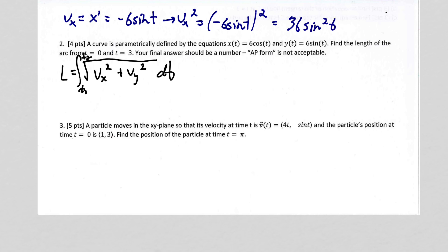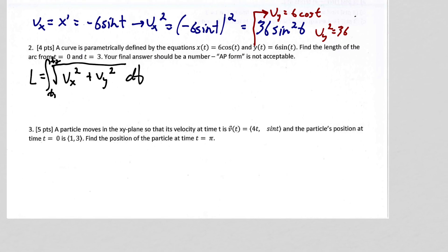Similarly, y over here is vy, I'm going to take the derivative of y of t. So I'm going to get 6 cosine of t. If I take that and square it, vy squared is going to be 36, I'm running out of space, but there we go, cosine squared of t.